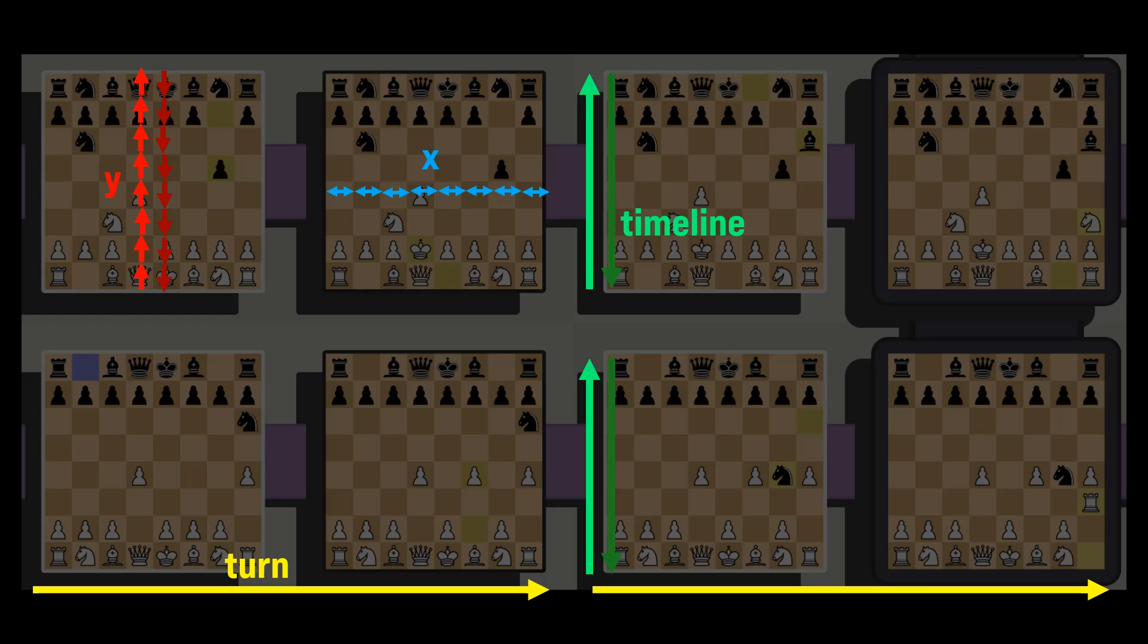the timeline dimension is reversed depending on what color you are. For white, moving forward in the timeline dimension is moving towards the outermost black pieces. And for black, moving forwards in the timeline dimension is moving towards the outermost white pieces.